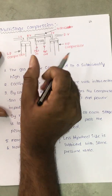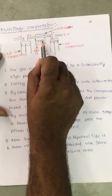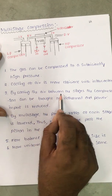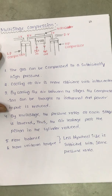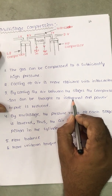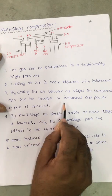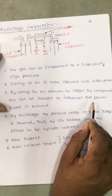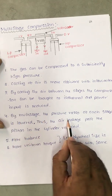The gas can be compressed to a sufficiently high pressure, and cooling of air is more efficient with the intercooler. By cooling the air between the stages, the compression can be brought close to isothermal. Since isothermal compression requires minimum work input, once the compression is isothermal, power input is very much reduced.